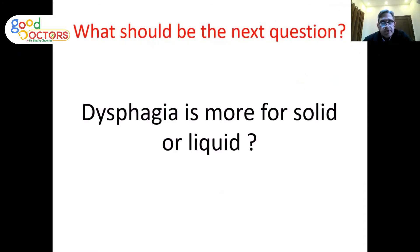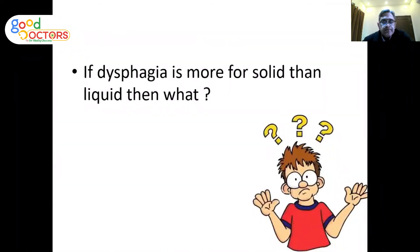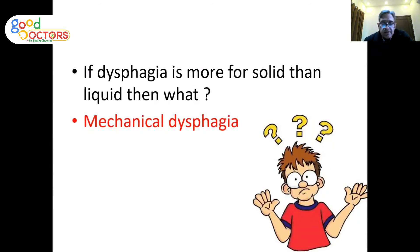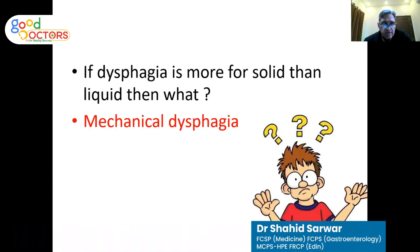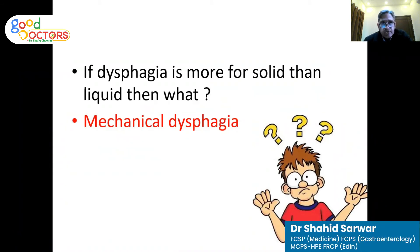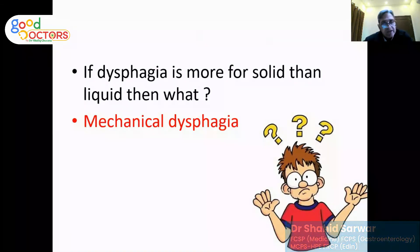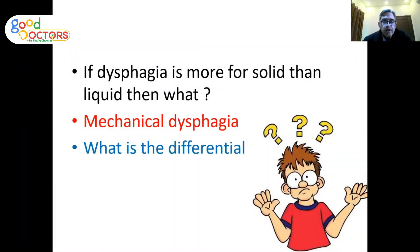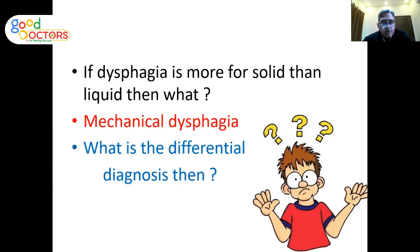If dysphagia is more for solids — the patient can take liquids and semi-solids but solid food gets stuck in the retrosternal region — this indicates mechanical dysphagia. Once mechanical esophageal dysphagia is established, a differential diagnosis should automatically come to mind, including Schatzky's ring, a mass in the esophagus, or a stricture.